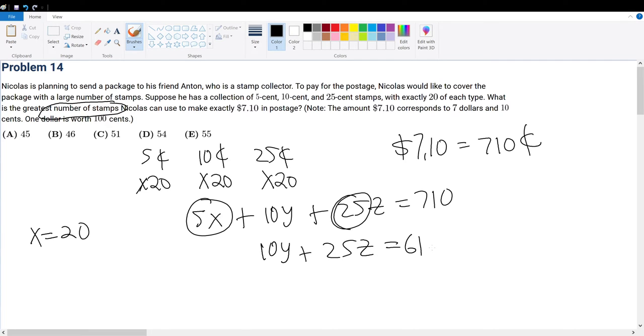Now with this, let's maximize 10y. If I want to maximize 10y, then y becomes 20. And if y is equal to 20, then 25z must equal 410. But here we ran into a problem.